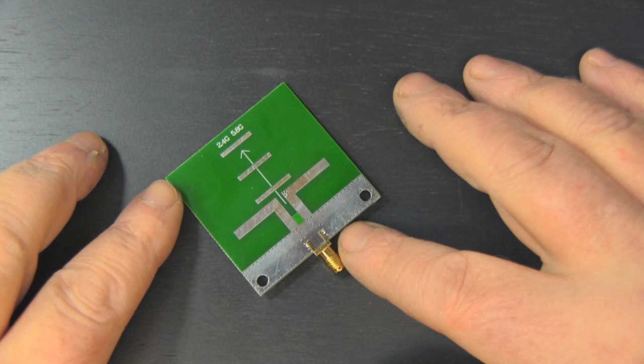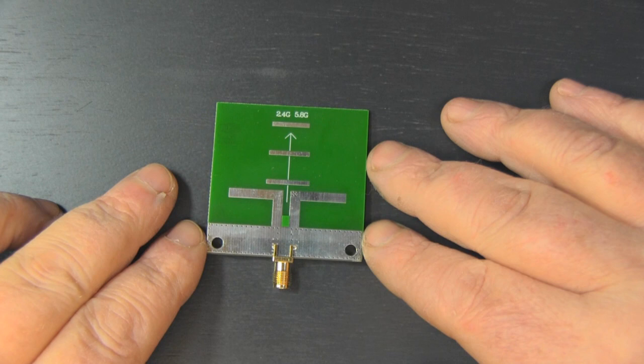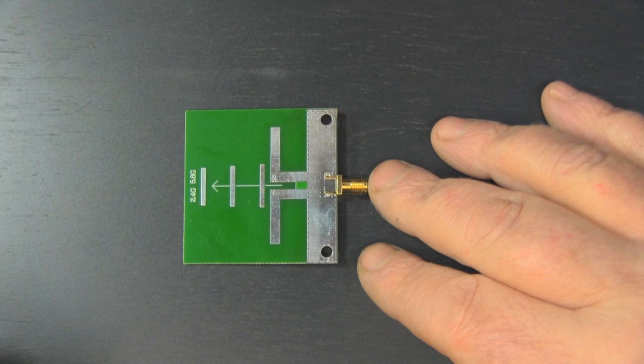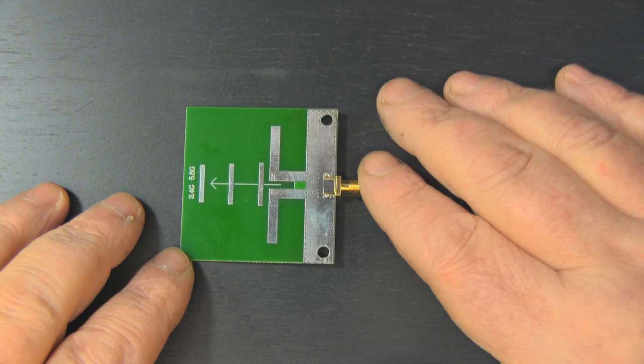What I've got on the bench today is a little Yagi antenna. It's the smallest Yagi antenna I've ever come across for the frequencies that it claims to work at. This is sold as a dual-band Yagi antenna for 2.4 gigahertz and 5.8 gigahertz - no 5 gigahertz Wi-Fi with this antenna.